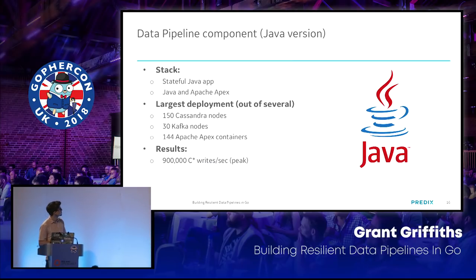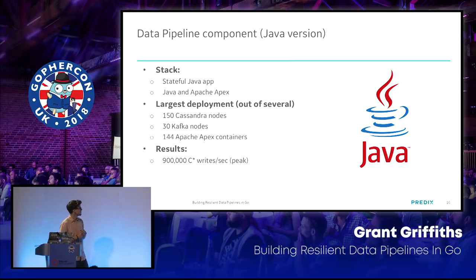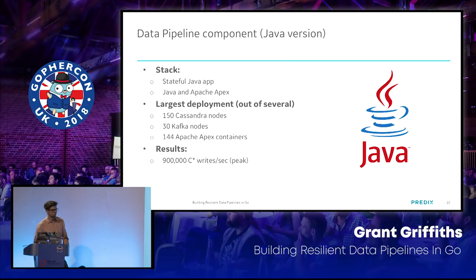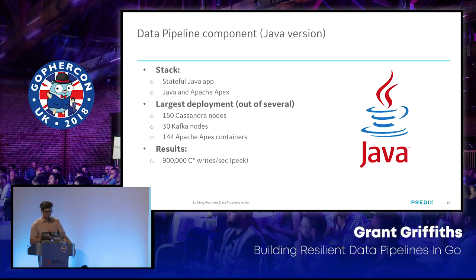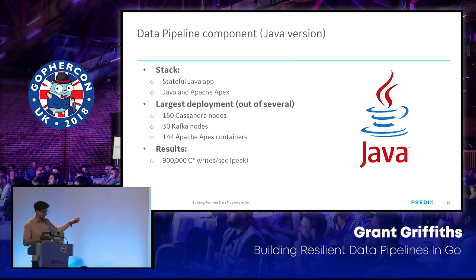Some fun facts about the Java version: it's a stateful Java app running on top of Apache Apex, deployed to a Hadoop cluster running in HDFS and HBase — a pretty bulky deployment. Our largest deployment right now is 150 Cassandra nodes, 30 Kafka nodes, and 144 Apache Apex containers. With that deployment we were getting about 900,000 writes per second at peak.